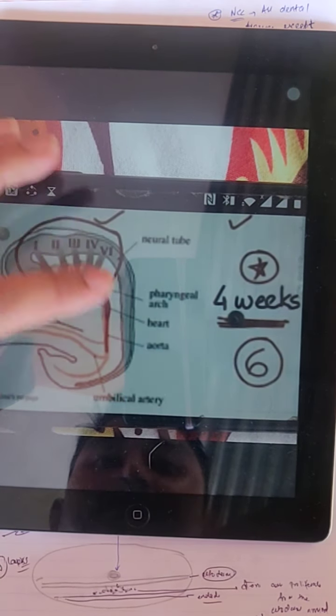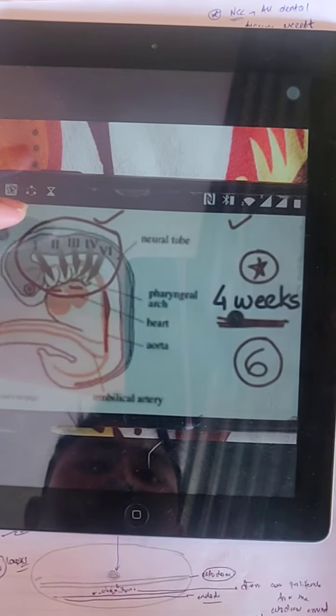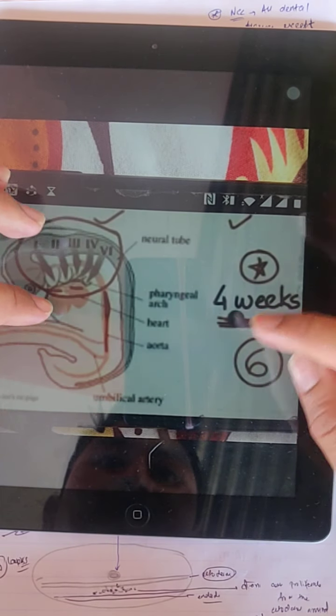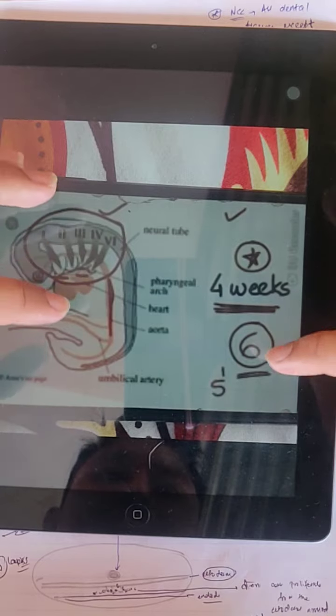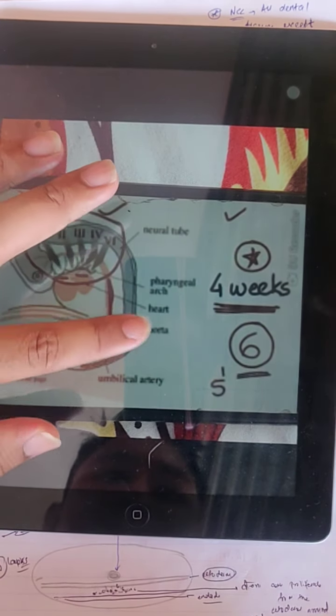Now the next one is first. This is 4 weeks, usually 6. Then the next one is 5. They are 1, 2, 3, 4, 6 pharyngeal arches.